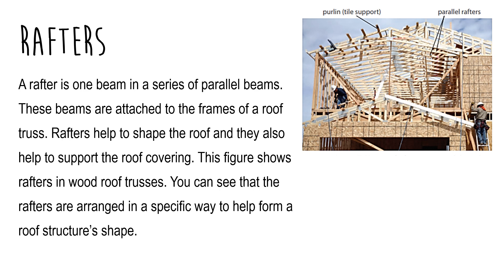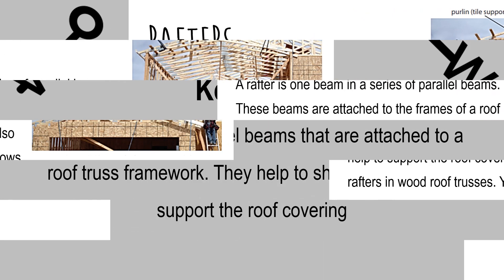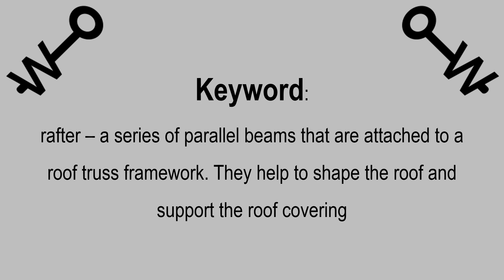Rafters. A rafter is one beam in a series of parallel beams. These beams are attached to the frames of a roof truss. Rafters help to shape the roof and they also help to support the roof covering. This figure shows rafters in wood roof trusses — you can see that the rafters are arranged in a specific way to help form a roof structure's shape. Rafters are a series of parallel beams attached to a roof truss framework that help to shape the roof and support the roof covering.